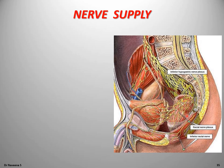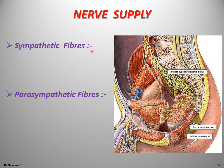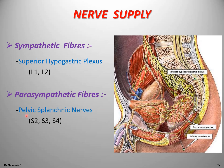The nerve supply of the rectum: the rectum is innervated by autonomic nerve fibers. Sympathetic fibers are derived from the superior hypogastric plexus, controlled by L1 and L2 spinal cord segments; they act as vasomotors and inhibit peristalsis of rectal musculature. Parasympathetic fibers are derived from pelvic splanchnic nerves forming a plexus around the rectum, controlled by S2, S3, S4 segments; they act as secretomotor and stimulate peristalsis. This nerve supply enables the mucous membrane to differentiate between feces and flatus within the rectum by sensing tension of the rectal wall.